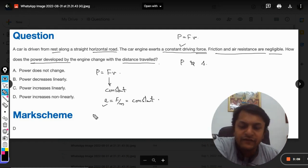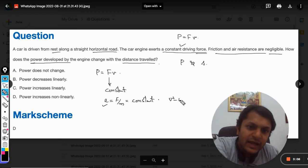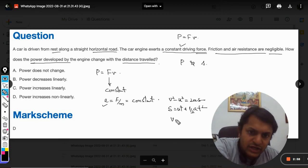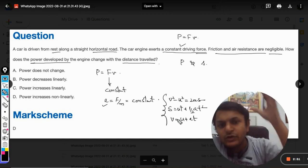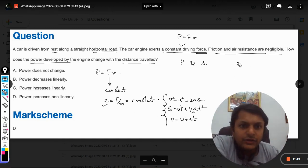Because acceleration is constant, we would be able to apply these formulas: s = ut + ½at², v = u + at. All the equations of motion are valid in this question.